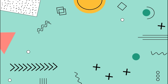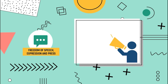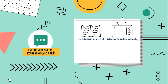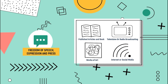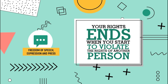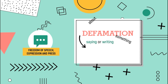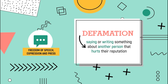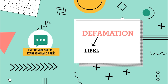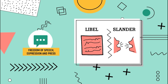Moving on to the freedom of speech, expression, and of the press. This is the right to express any opinion without censorship or restraint, including the right to express your views through published articles or books, television or radio broadcasting, works of art, the internet, and social media. However, there is a limitation: this right ends when you start to violate the rights of another person or the values of society. For example, defamation — saying or writing something that hurts another person's reputation. There are two kinds: libel, when the statement is made in writing and published, and slander, when the hurtful statement is spoken. You can be sued if you commit either.